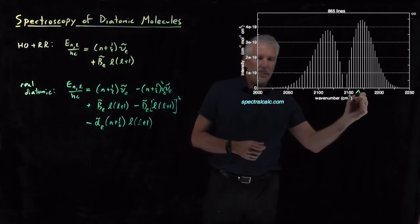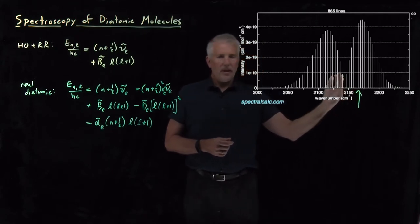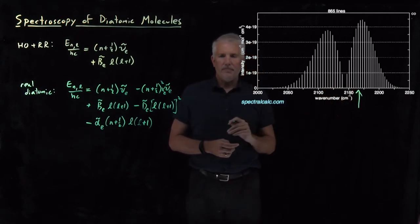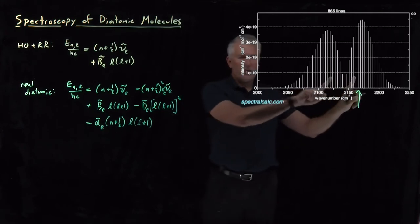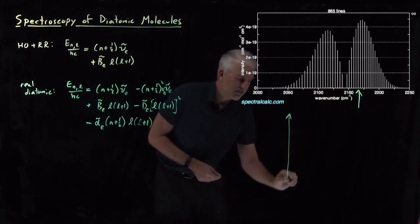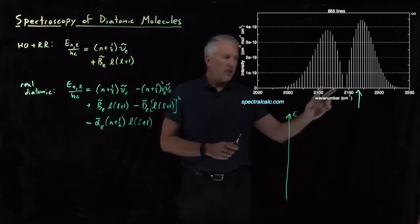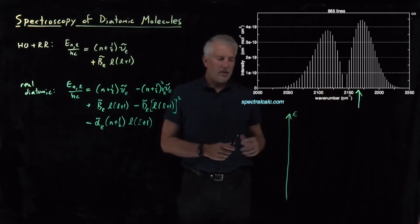In particular, we understand why we've gotten red shifted from 2170 wave numbers down to a lower value for the center of the spectrum. We understand why there's rotational peaks stacked on top of these vibrational transitions. We've talked about how there's a weak signal here from the excited state transitions.